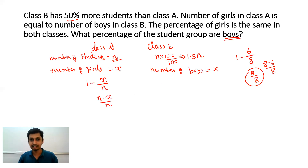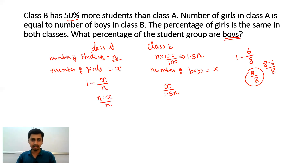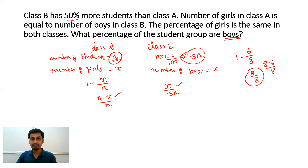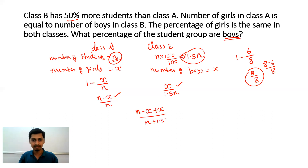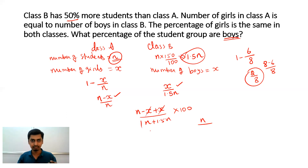The number of boys in class B is x. So the percentage of boys in class B is x/(1.5n) × 100. The total number of boys across both classes is (n − x) + x. The total number of students is n + 1.5n. So the percentage of boys in the student group is: (n − x + x) / (n + 1.5n) × 100.